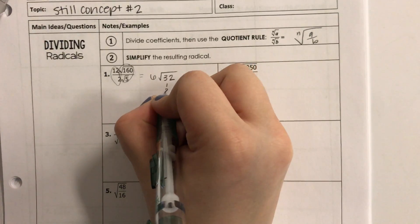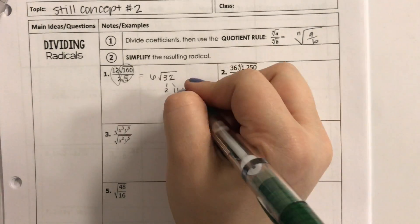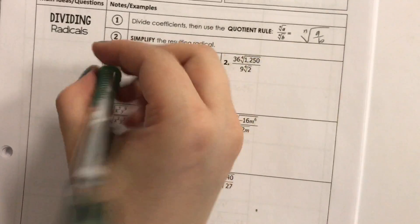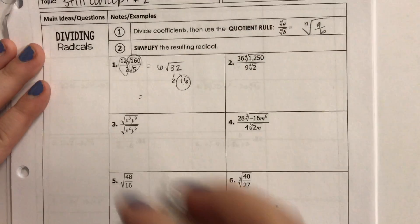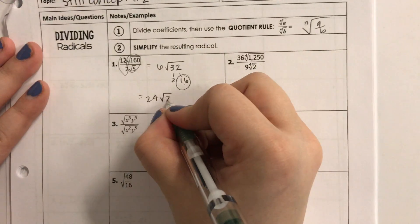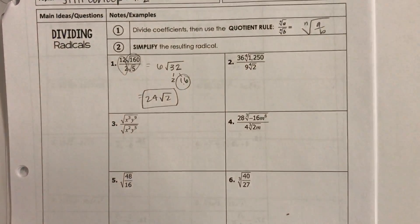Now I simplify 2 times 16. Oh, I know the square root of 16 is 4. So, 4 times 6 is 24. Square root of 2. Pretty easy, huh?